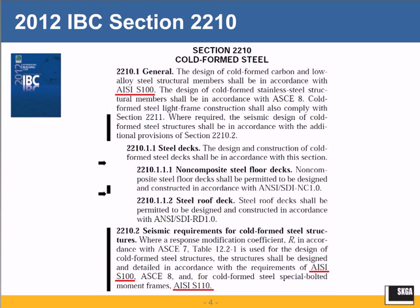Regarding seismic requirements for cold-formed steel structures when using the R-factor table — ASCE 7 Table 12.2-1 — when choosing an R-factor, you need to comply with AISI S100 and ASCE 8. For cold-formed steel special bolted moment frames, you are to use AISI S110. This is a new standard introduced in a new system in ASCE 7-10. The R-factor for that is approximately three and a half.